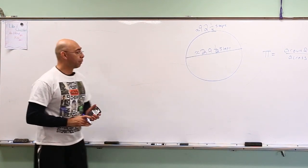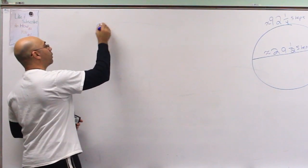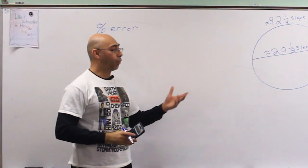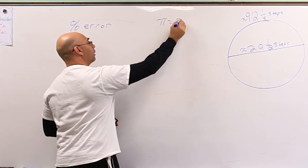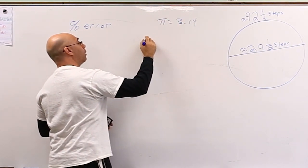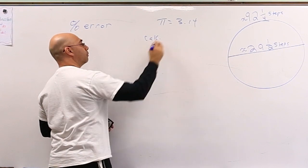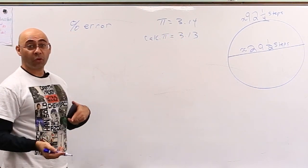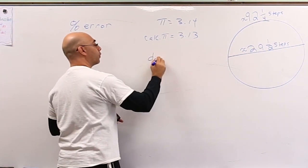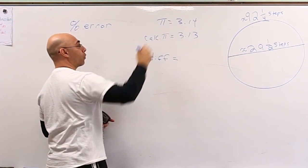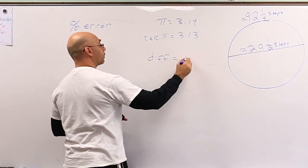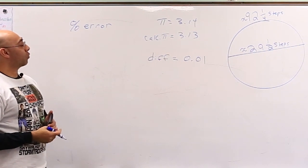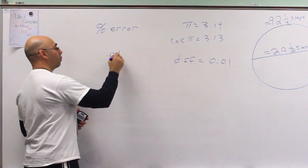As an added note, to figure out my percent of error, I want to see how far off I was. Actual pi is 3.14. My calculated pi is 3.13. If I subtract those, the difference is 0.01. So my percent of error is 0.01 based on the actual pi.